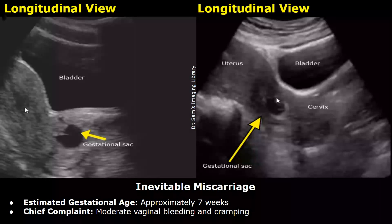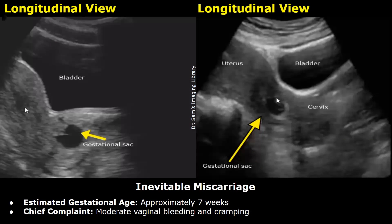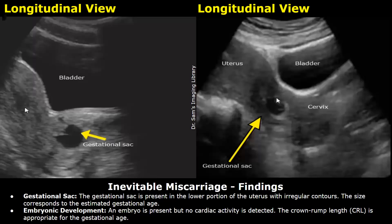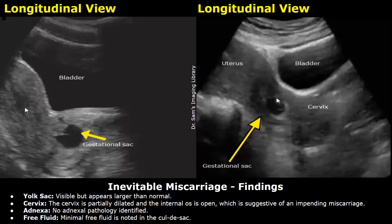Now we have a report for inevitable miscarriage; estimated gestational age approximately seven weeks; chief complaint: moderate vaginal bleeding and cramping. These are the findings: the gestational sac is present in the lower portion of the uterus with irregular contours; the size corresponds to the estimated gestational age. Embryonic development: an embryo is present but no cardiac activity is detected; the CRL is appropriate for the gestational age. Yolk sac: visible but appears larger than normal. The cervix is partially dilated and the internal os is open, which is suggestive of an impending miscarriage. No adnexal pathology identified; minimal free fluid is noted in the cul-de-sac.